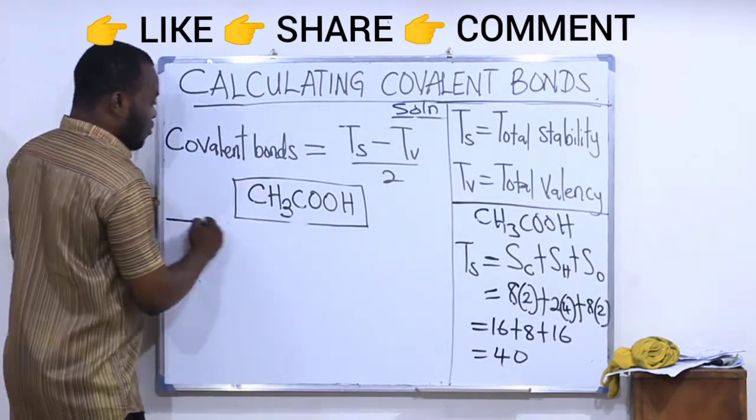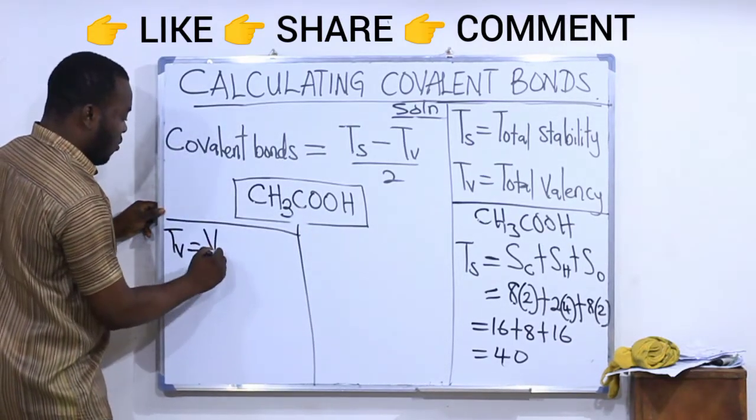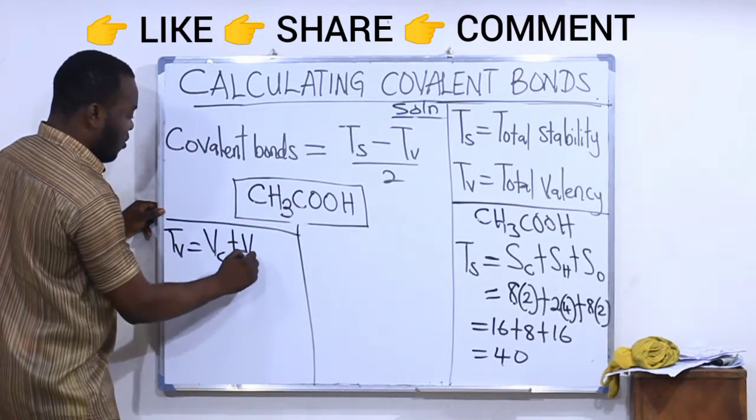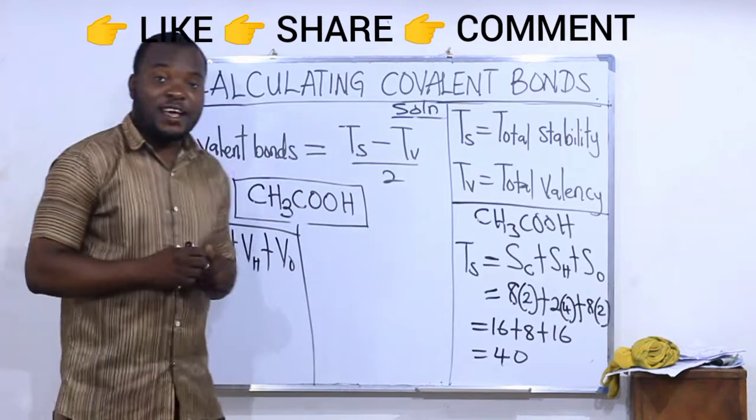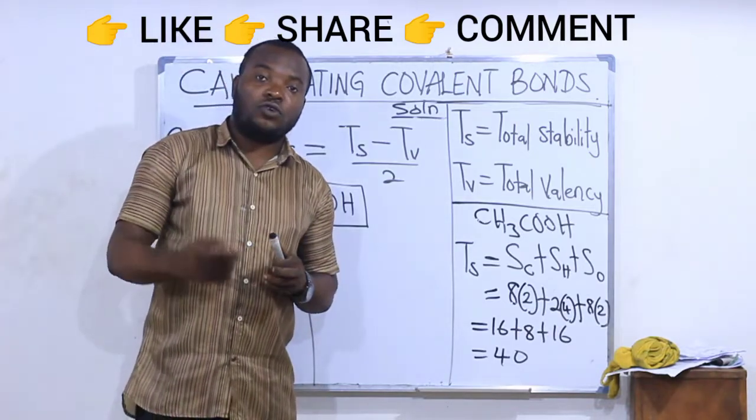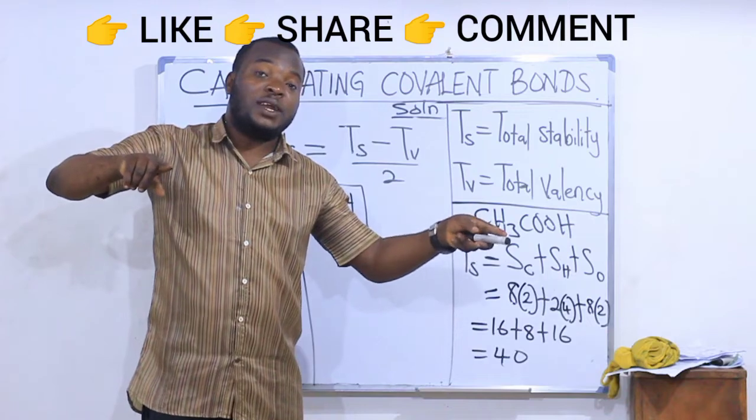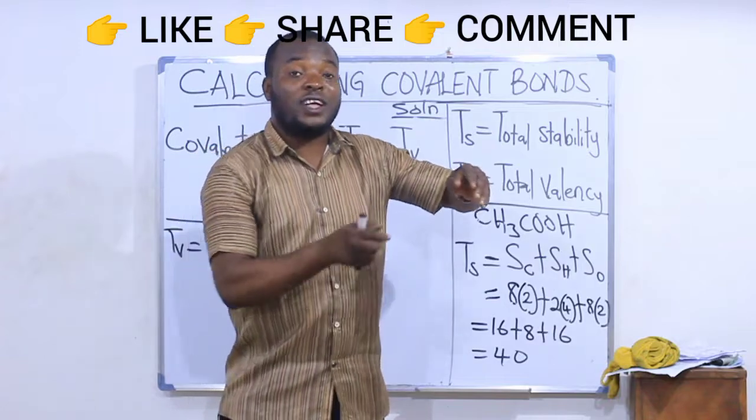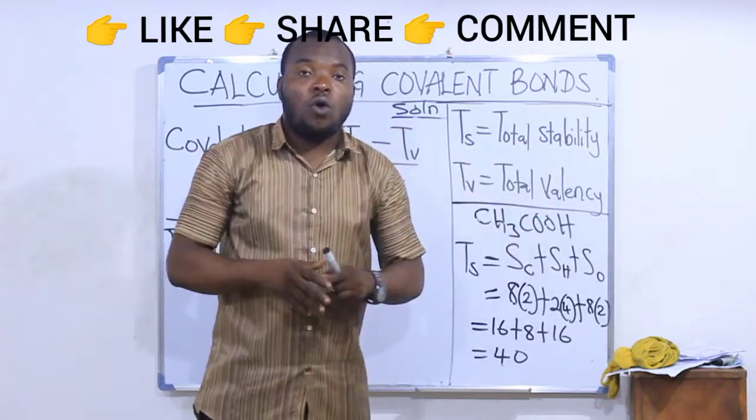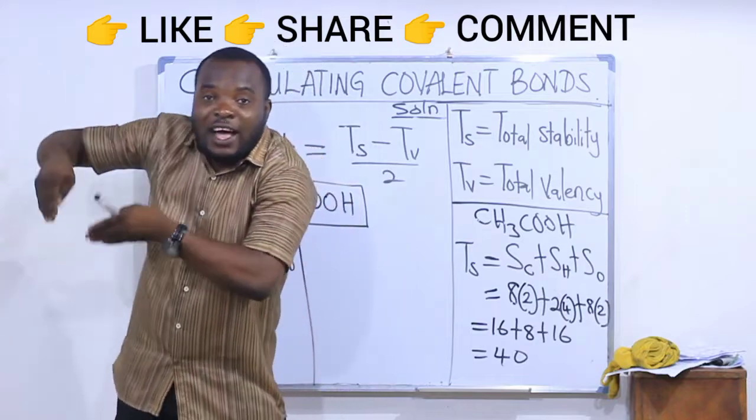Let's find our total valency. Total valency will be valency of carbon plus valency of hydrogen plus valency of oxygen. The valency is the number of electrons that are in the outermost shell, while stability is the number that are supposed to be there. Stability is the total number of electrons that are supposed to be there, while valency is the total number of electrons that are there.